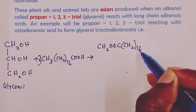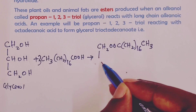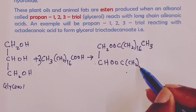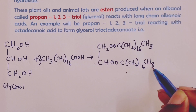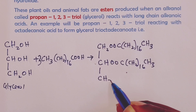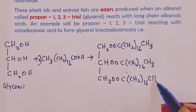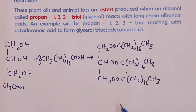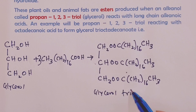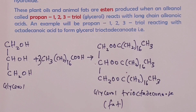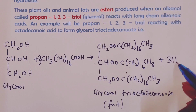We end up producing our fat, glycerol tri-octadecanoate, which has three octadecanoate chains each linked through ester bonds: CH2OOC(CH2)16CH3, CHOOC(CH2)16CH3, and CH2OOC(CH2)16CH3. This huge structure is called glycerol tri-octadecanoate, which is an example of a fat found in animal tissue. This production is accompanied by three moles of water.